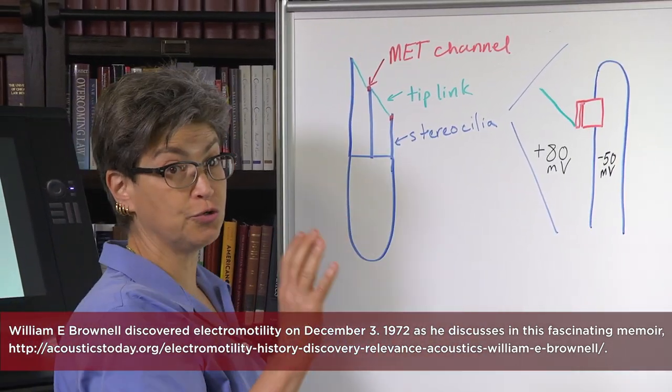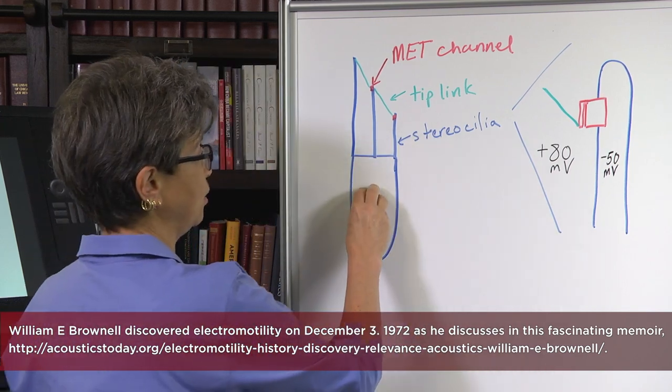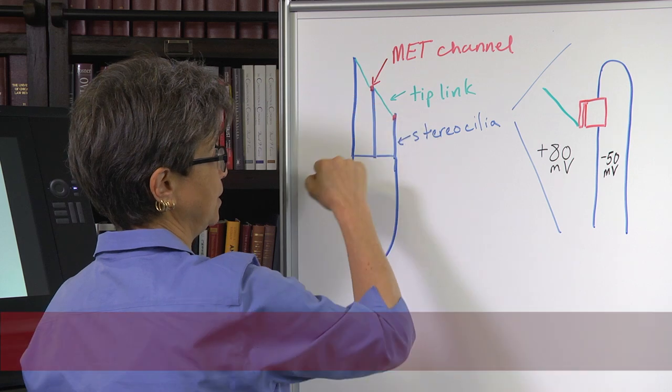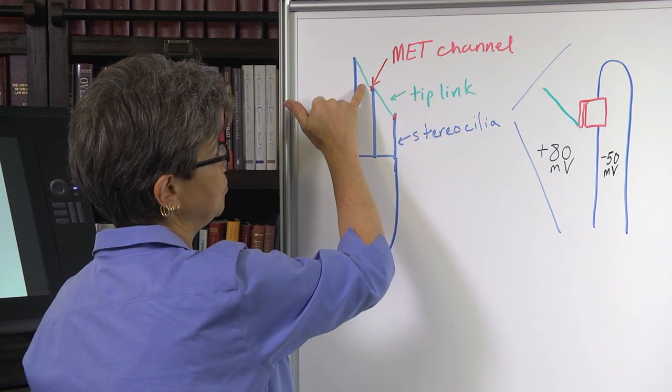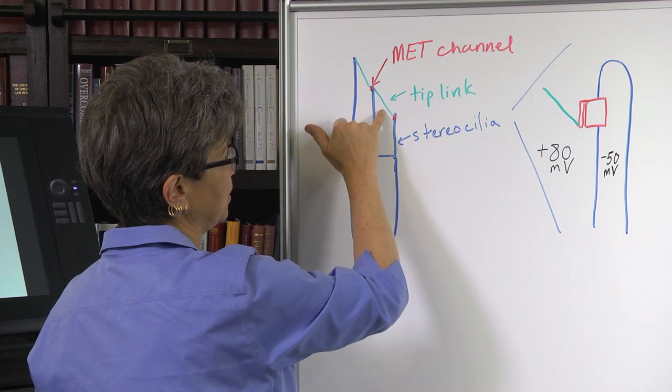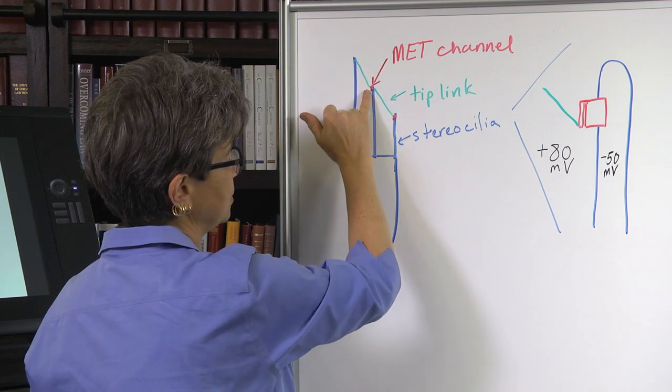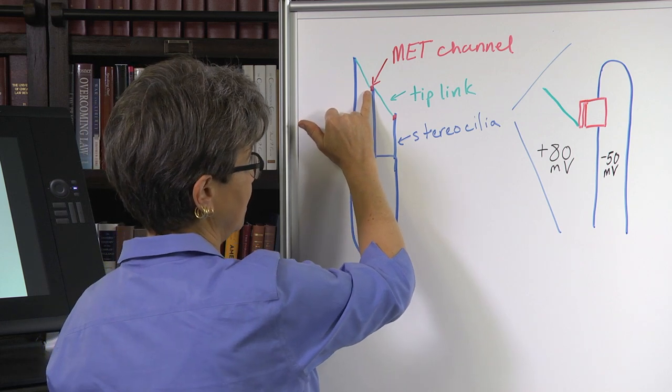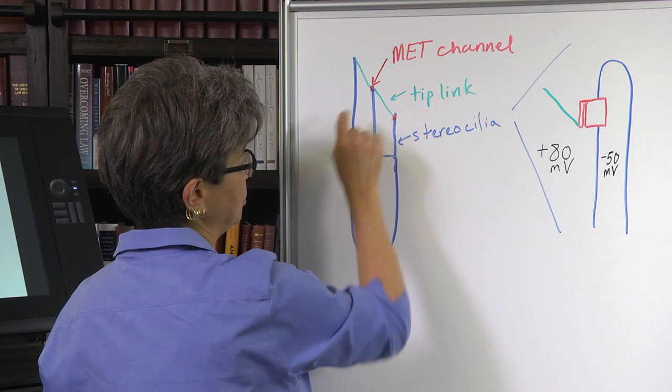What we see is a diagram of a hair cell, and this is true of either outer or inner hair cell. It has a cell body and stereocilia, and the stereocilia are joined by these proteinaceous tip links. So there's a tip link that joins a taller stereocilia to the next stereocilia, and the tip link ends on the MET channel.